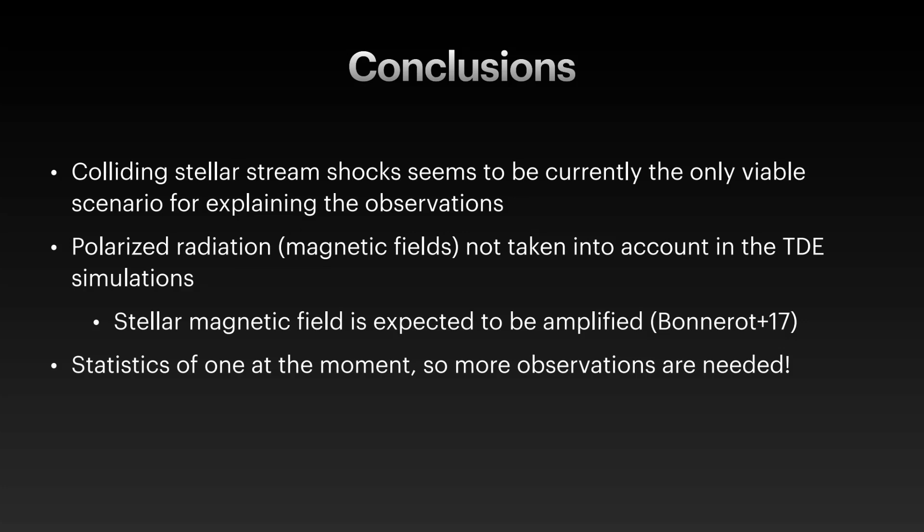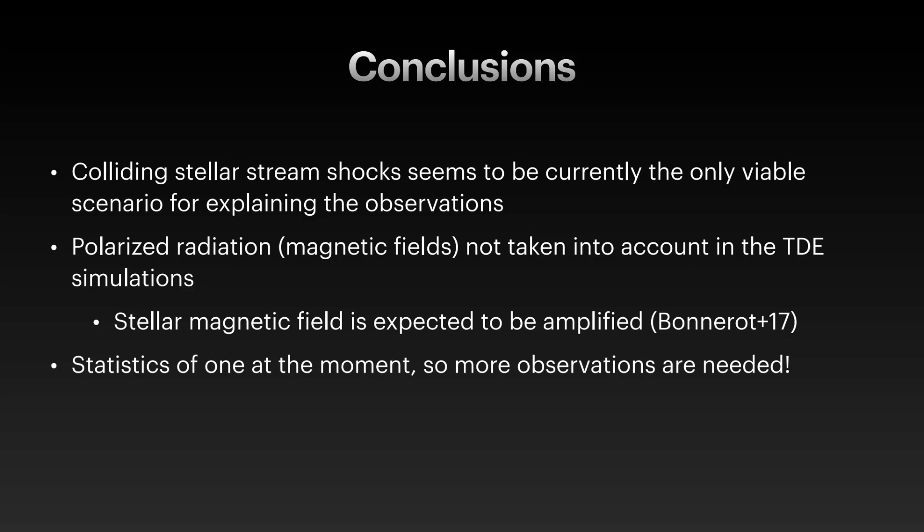Work by Bonnerot et al. in 2017 shows that the stellar magnetic field is expected to be amplified a lot in stellar stream shocks, so the shocks can definitely be powerful enough to produce synchrotron emission polarized up to 20%. Of course, this is a statistic of one at the moment, so we are desperately looking for more observations — hopefully with NOT for at least the next couple of years, and hopefully with the NTE as well. Thank you.